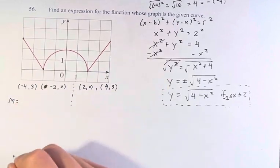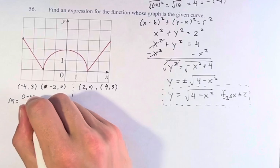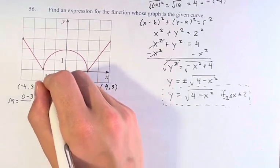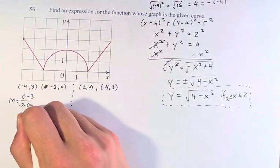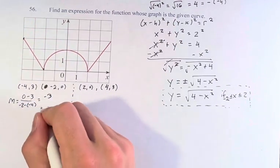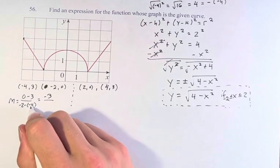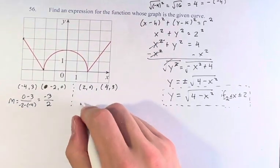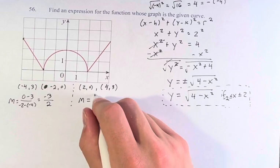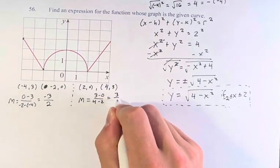So first, the slope. The change in y over the change in x, you take 0 - 3 over -2 - (-4). 0 - 3 is -3. -2 - (-4) is -2 + 4. Negative 2 plus 4 is 2. Here, we have 3 - 0 over 4 - 2, which is positive 3 over positive 2.